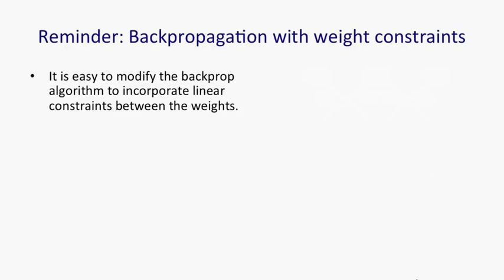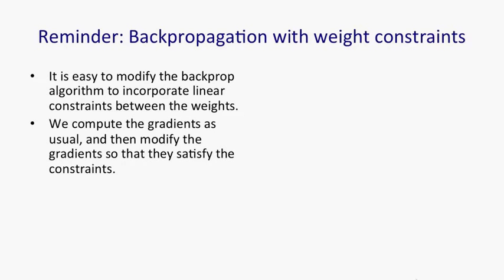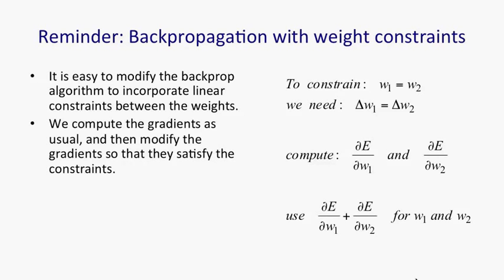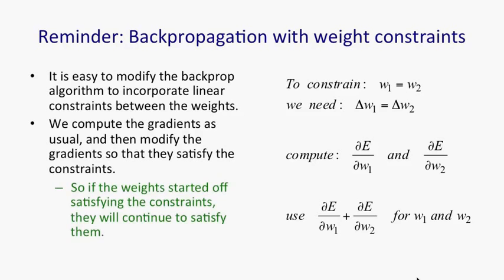Now, backprop is good at learning when there are weight constraints. We saw this for convolutional nets. We can actually incorporate any linear constraint quite easily in backprop. We compute the gradients as usual, as if the weights were not constrained, and then we modify the gradients so that we maintain the constraints. So if we want W1 to equal W2, we start off with them equal, and then we need to make sure that the change in W1 equals the change in W2. We do that by taking the derivative of the error with respect to W1 and W2, averaging them, and then applying the same quantity for updating both weights. So if the weights started off satisfying the constraints, they'll continue to satisfy the constraints.